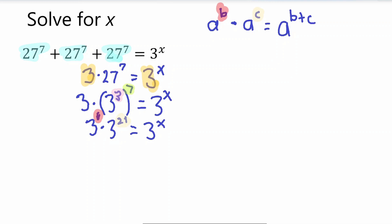Alright, so basically, 3 to the power of 1 times 3 to the power of 21 is equal to 3 to the power of 1 plus 21. The two exponents added together. And 1 plus 21 is what? That is 22.